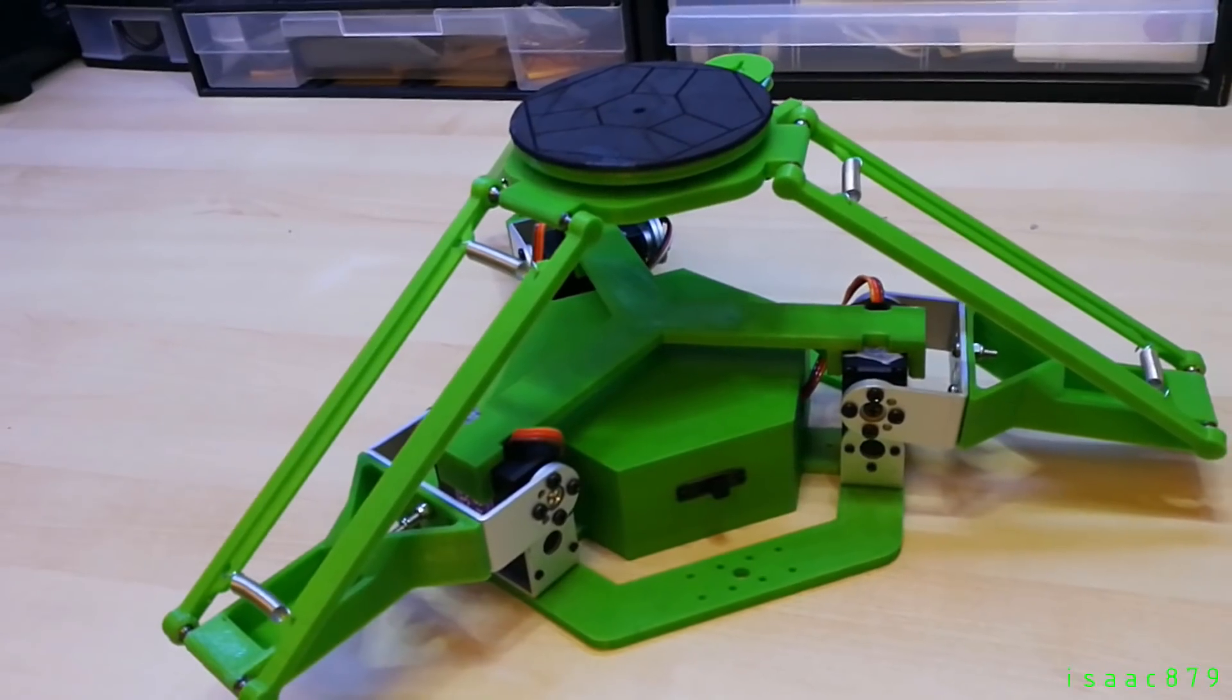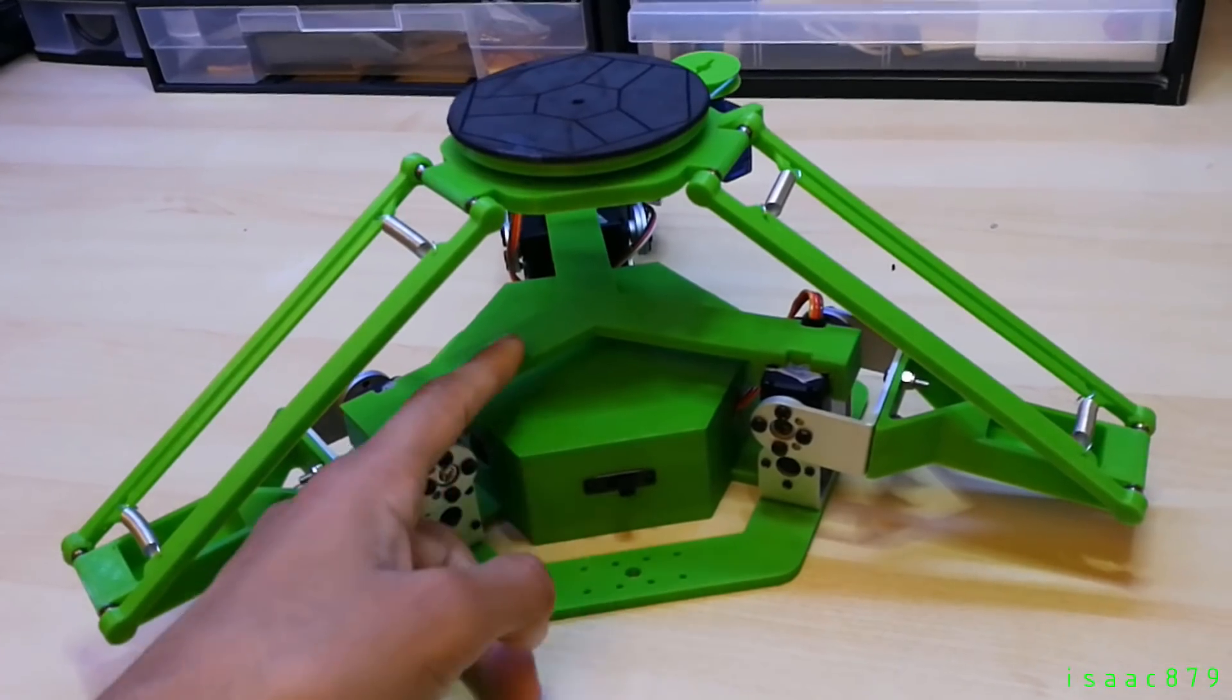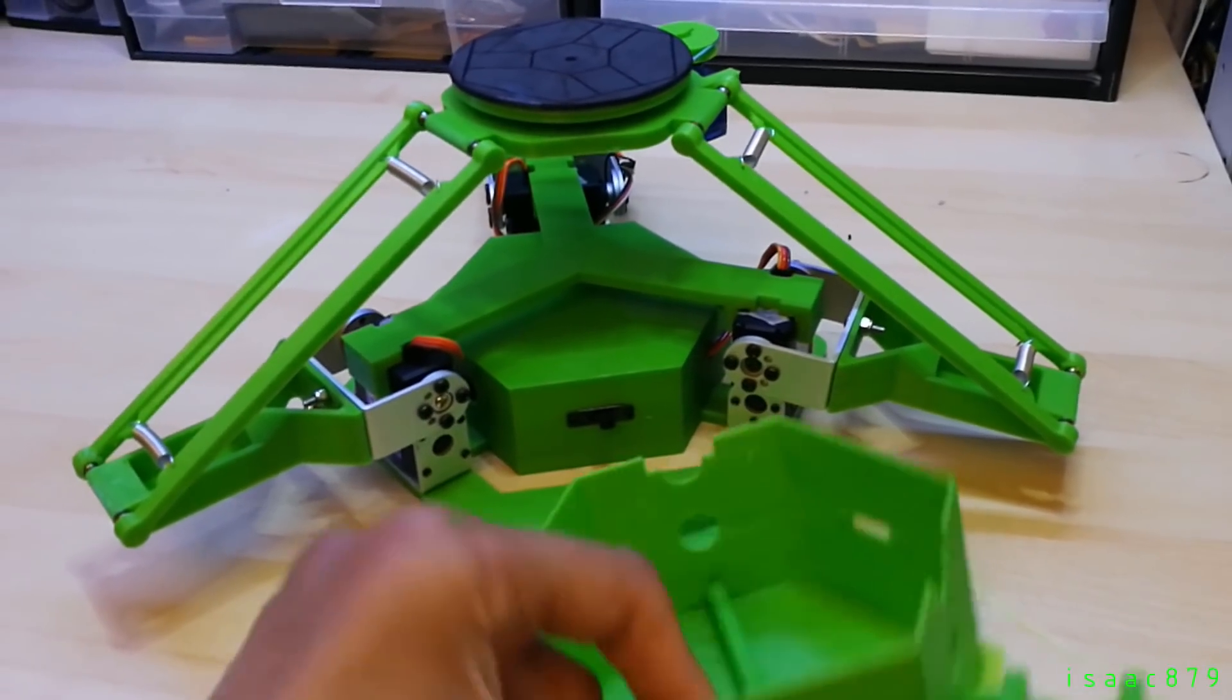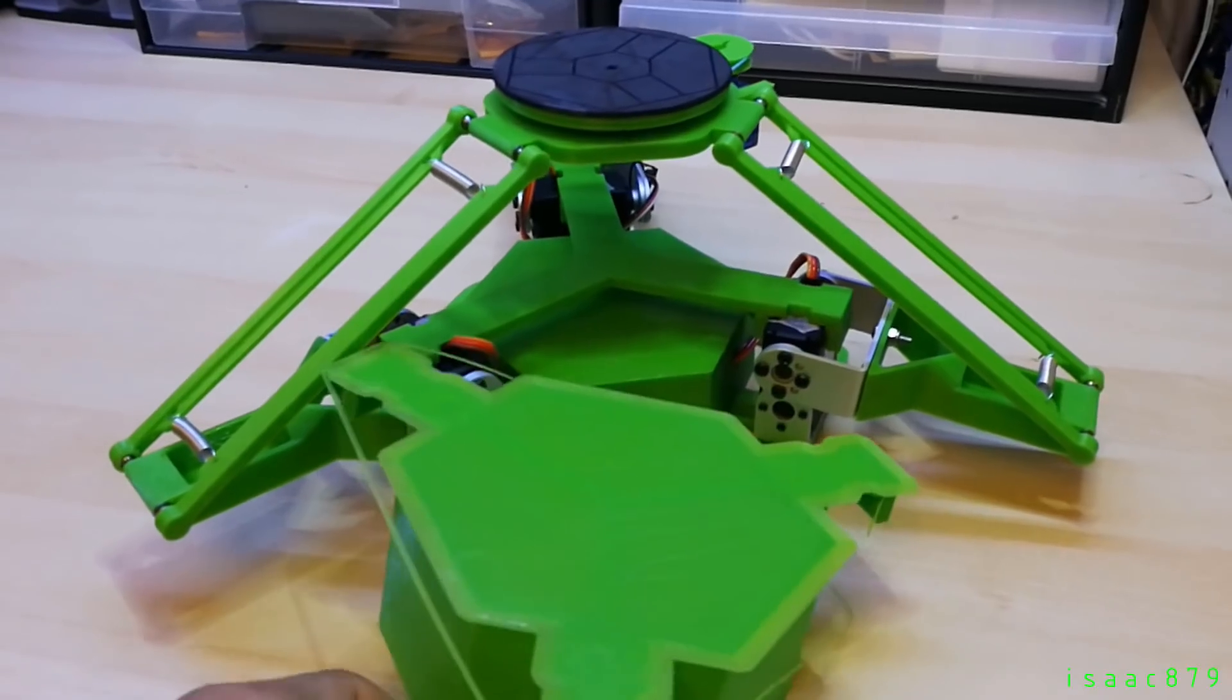I have now designed and printed a replacement for the cross brace and components cover. It's basically them both just merged together. All I need to do is clean up the prints and check it all fits.